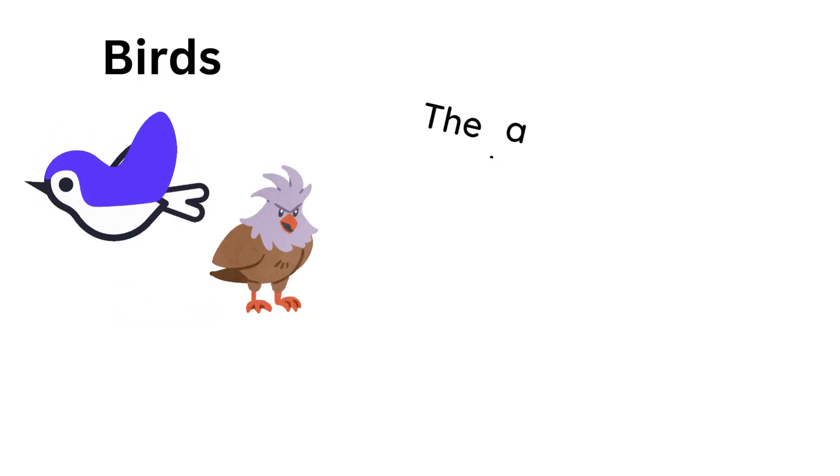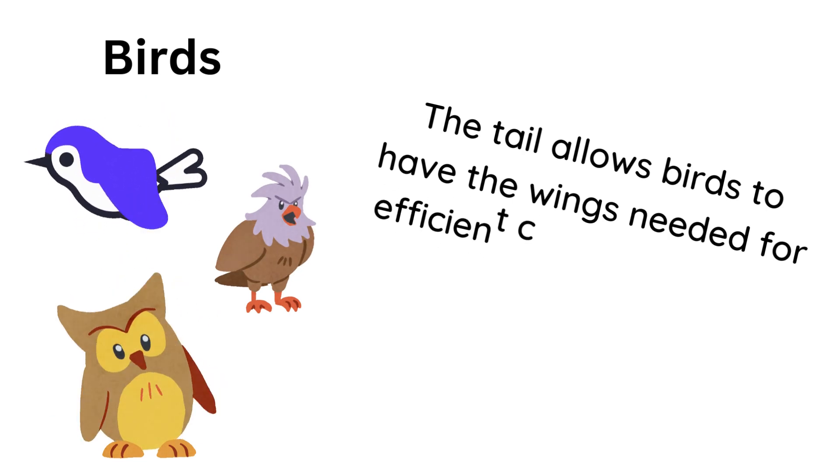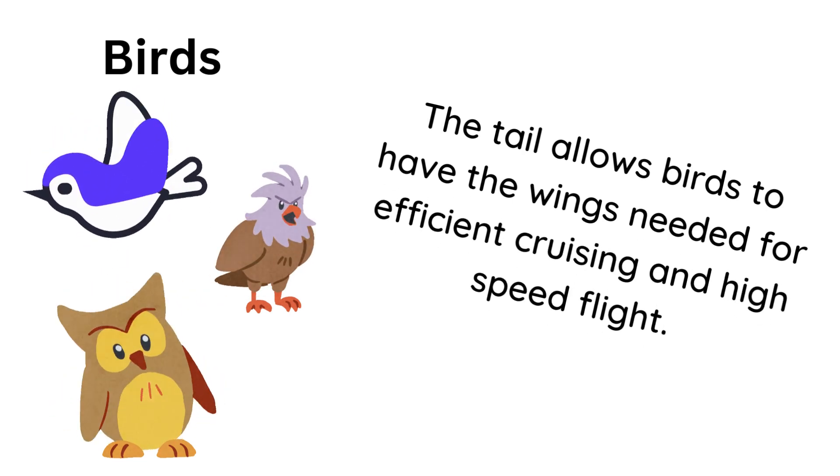The tail allows birds to have the wings needed for efficient cruising and high-speed flight. At the same time, the tail can be spread at low speeds or during turns to reduce induced drag.